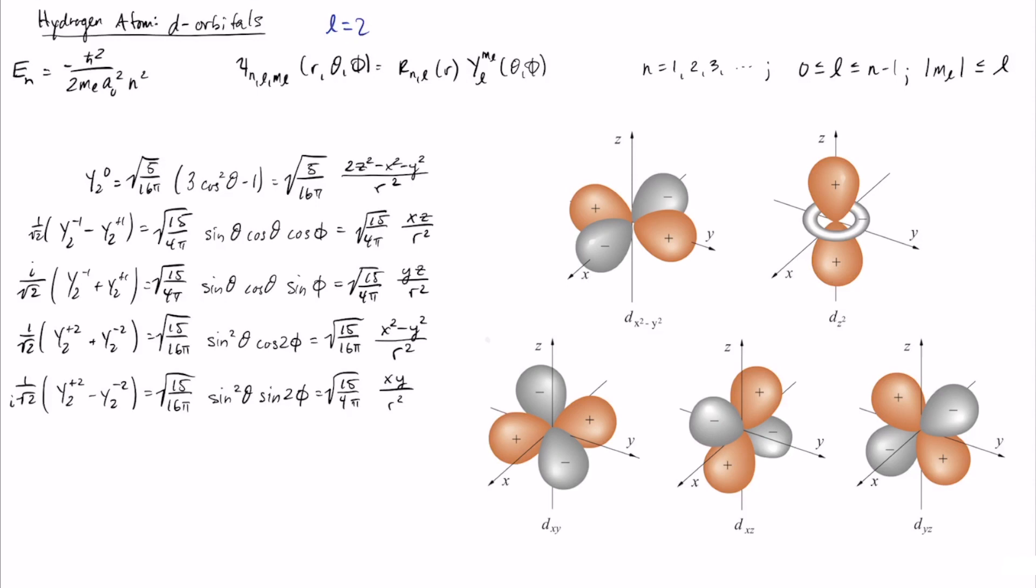So when we talked about the p orbitals, we talked about how linear combinations of different p orbitals, different complex l equals 2 spherical harmonics, can get you the real p orbitals. So remember we took linear combinations of y1 plus and minus 1 and that was what defines the px and the py orbitals.